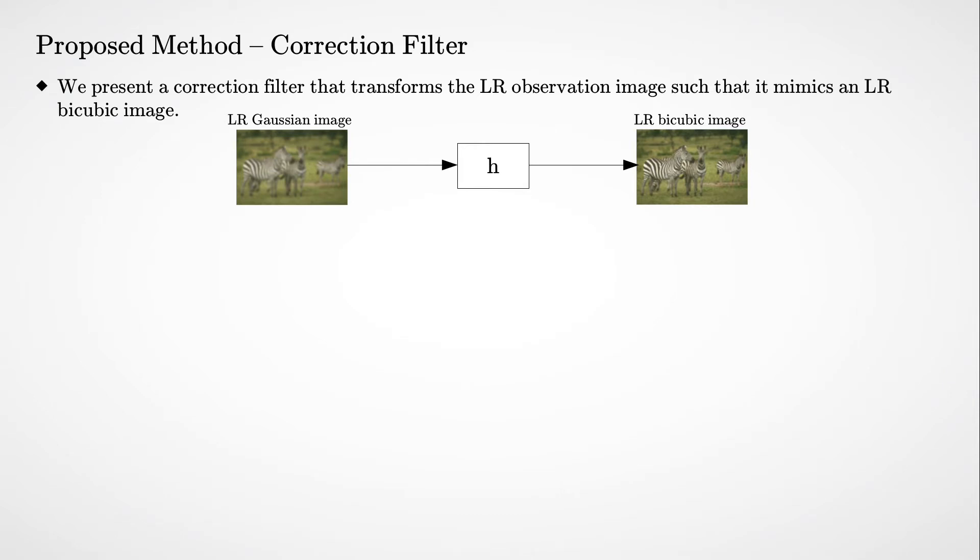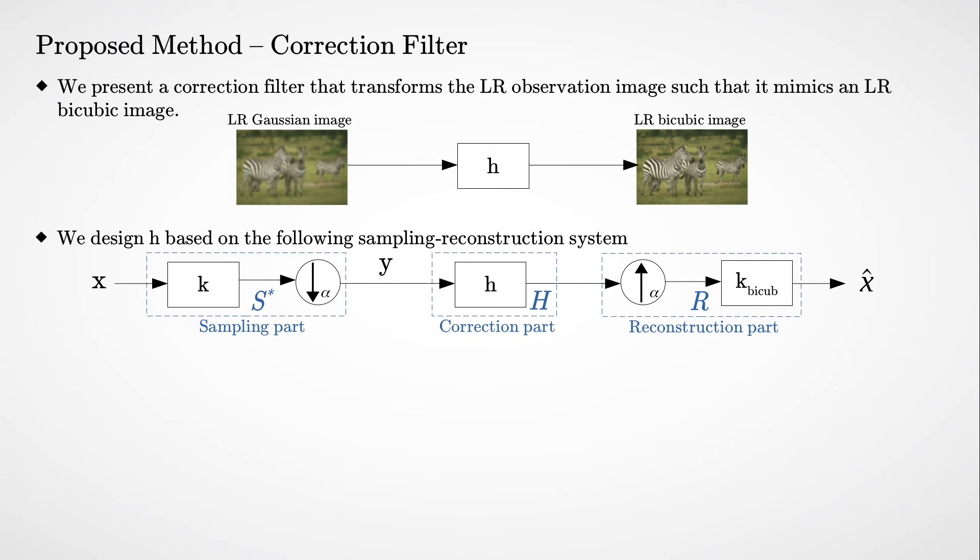In this work, we propose to apply some filter H on the observed low resolution image that transforms it into the low resolution bicubic image. This leads to the following sampling and reconstruction system from the theory of generalized sampling.